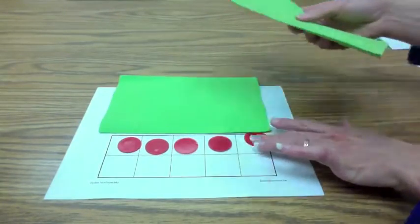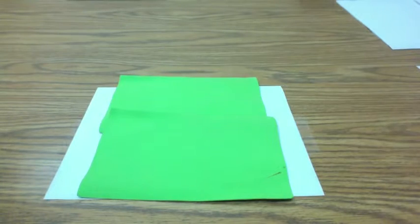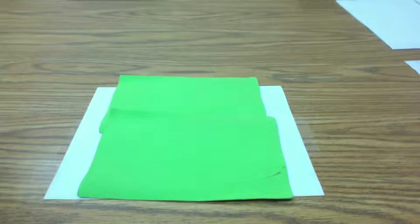And here's the bottom. Five. And can you figure out how many that would be all together? Twelve. How do you know 12?